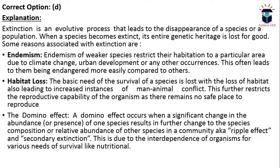The next factor is the domino effect. The domino effect occurs when a significant change in the abundance or presence of one species results in further changes to the species composition or relative abundance of other species in a community — also known as ripple effect and secondary extinction. Like a game where one block's removal causes all others to fall, a change in one condition results in significant changes in other conditions.